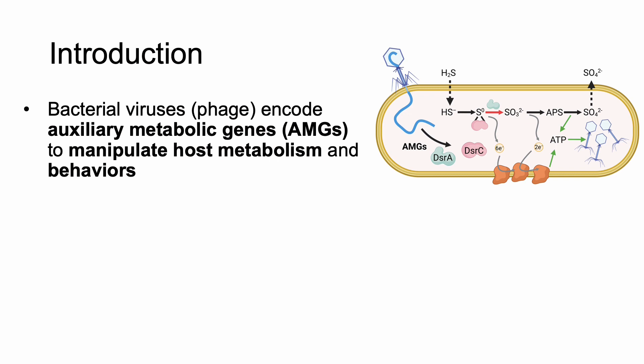Viruses infecting bacteria, also known as phage, have been found to encode auxiliary metabolic genes or AMGs that they can use to manipulate host metabolism and modify host behaviors, all for the benefit of the phage. In the upper right is an example diagram of a phage increasing flux through a sulfur metabolic pathway in which the phage encodes two AMGs that are known to be rate limiting in this pathway.